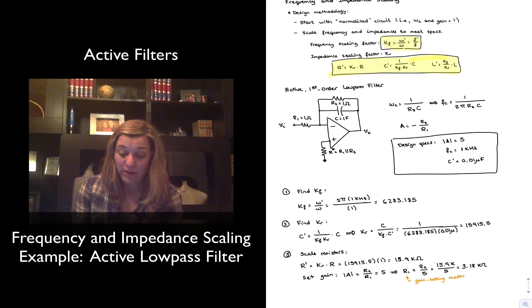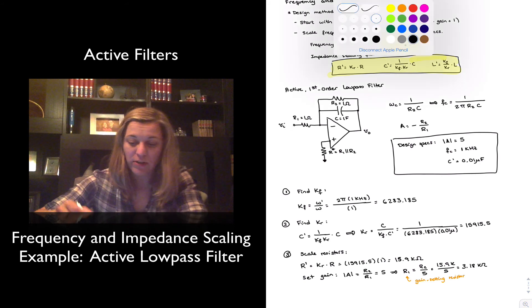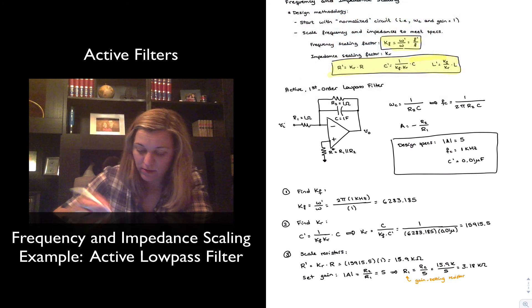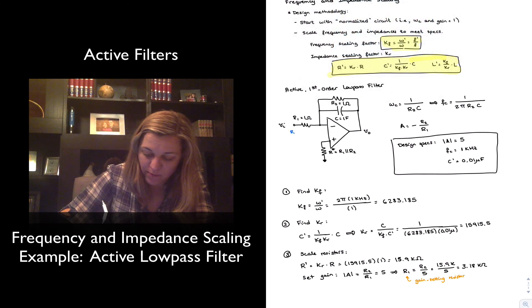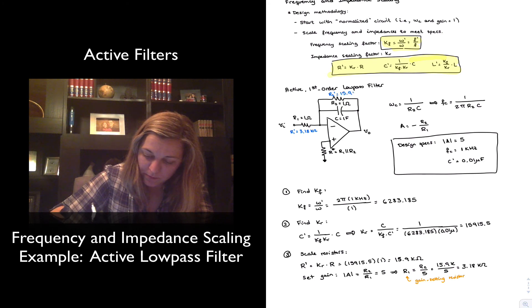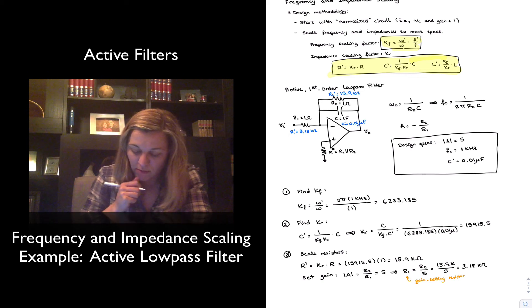And that's it. My step number 4 will be to verify. I'm going to go ahead and write the values already in the original circuit. So my R1 prime will be 3.18 kilo ohms. My R2 prime will be 15.9 kilo ohms. My C prime will be 0.01 microfarads.